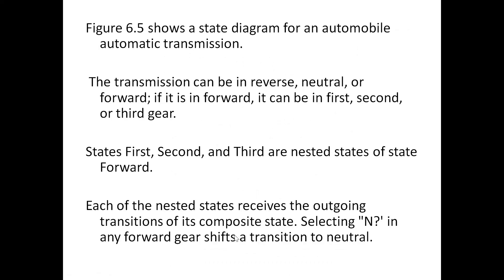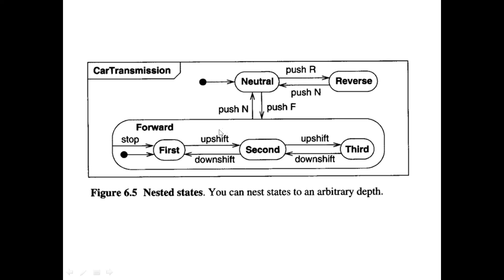The car transmission is another nested state example. In 'forward' you again have first, second, and third gears. The car can be in three possible states: neutral, reverse, or forward. 'Forward' itself contains nested states — first, second, or third — depending on the situation. This illustrates the nested state concept clearly.